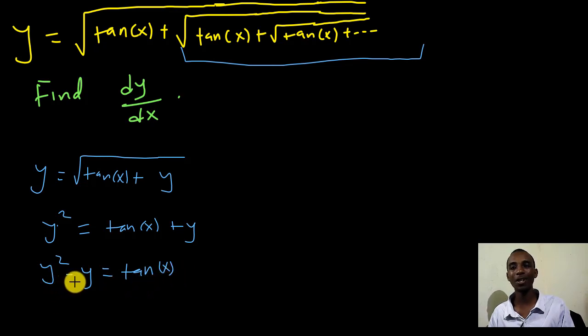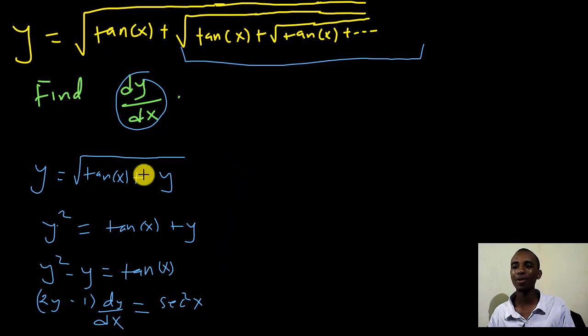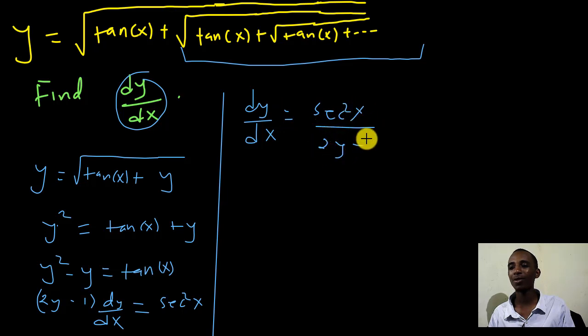Let's now take derivatives on both sides with respect to x because we are finding dy dx. So we'll have 2y, that's the derivative of y squared, and then minus 1. All this is with respect to x, so I write dy dx here. The derivative of tan x, that's going to be sec squared x. So we're almost there.